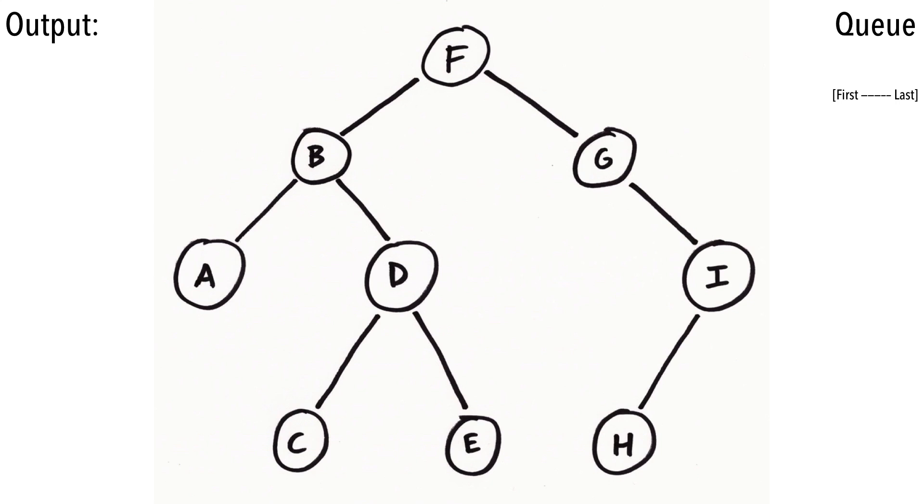Following our pseudocode, we start with an empty queue. Next, we're ready to add the root of the tree, F, to our queue.